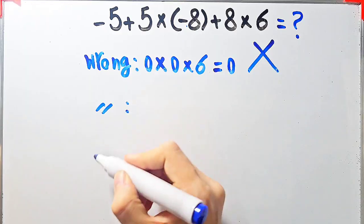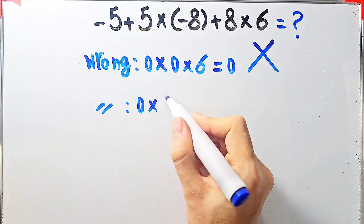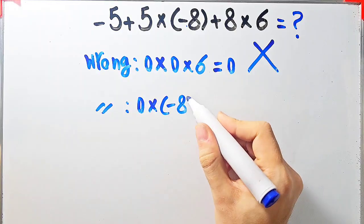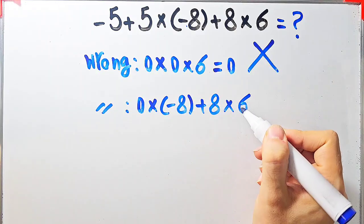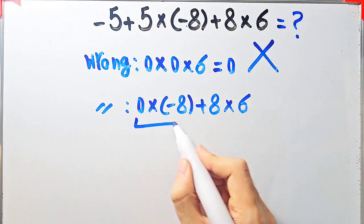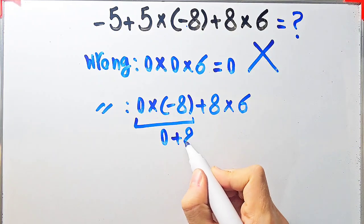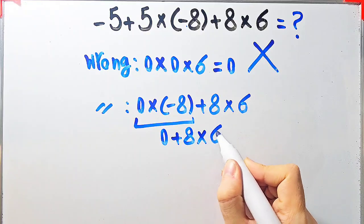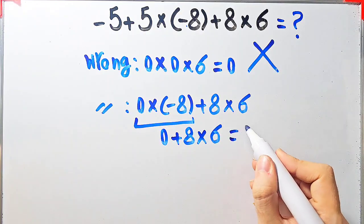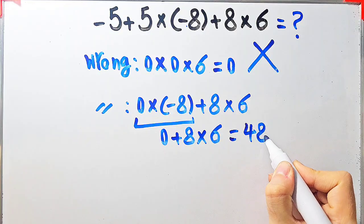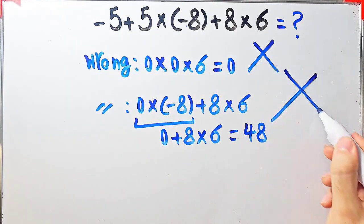Others try a different incorrect approach: negative 5 plus 5 equals 0, then 0 times negative 8 plus 8 times 6. Starting from the left: 0 times negative 8 equals 0, 0 plus 8 equals 8, 8 times 6 equals 48. They say the answer equals 48, but this is definitely wrong.